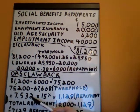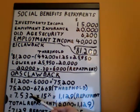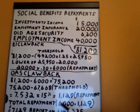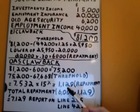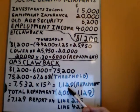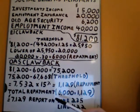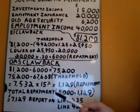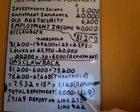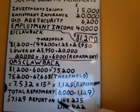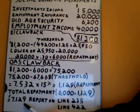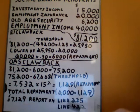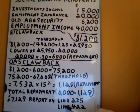We must then take 15% of that $7,532. That is the social benefit repayment on behalf of the old age security, which works out to $1,129. Adding the $1,129 plus $6,000 equals a total repayment of $7,129.